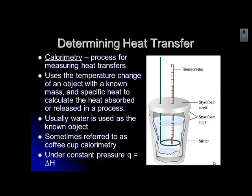One assumption we make is that this is happening under constant pressure — we're at atmospheric pressure, which doesn't change a lot day to day. So we can say in that case that Q equals delta H, the change in enthalpy. That just tells us that we can use our equations for Q.